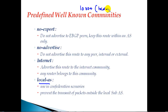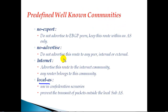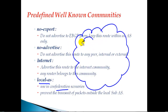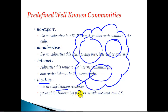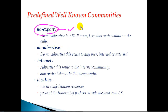The fourth attribute is local-as. When a router receives any network with the local-as attribute, it is going to advertise only to the internal routers within the same sub-autonomous system number. This is especially applicable in BGP confederations, which is the method of splitting a large autonomous system number into smaller sub-autonomous systems. If any router receives an update with local-as, it will advertise to all routers within the sub-autonomous system but not to any other external sub-autonomous system.